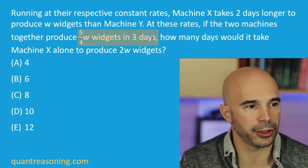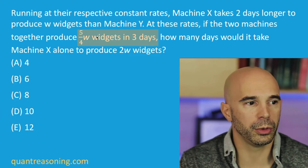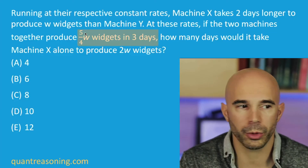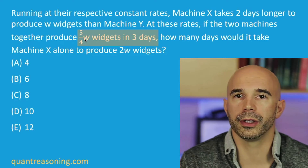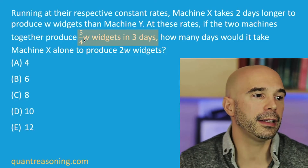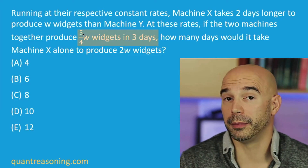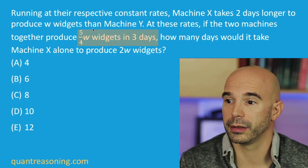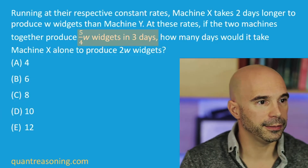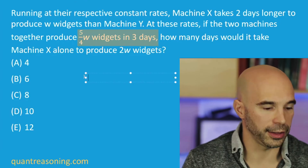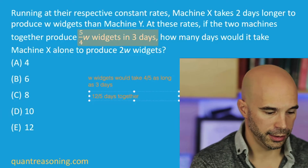We can use ratios here to figure out exactly how much time it would take. W is what fraction of this amount of work? If this said five W, you'd say we only want to do one-fifth as much work. If this said eight W, you'd say we only want one-eighth as much work. You're taking the reciprocal. If this said half W, you'd say we want to do twice as much work — again, taking the reciprocal. So what's the reciprocal of five-fourths? Four-fifths. So a single W would take four-fifths as long as three days — that's twelve-fifths. That's how long it would take them together to produce W.